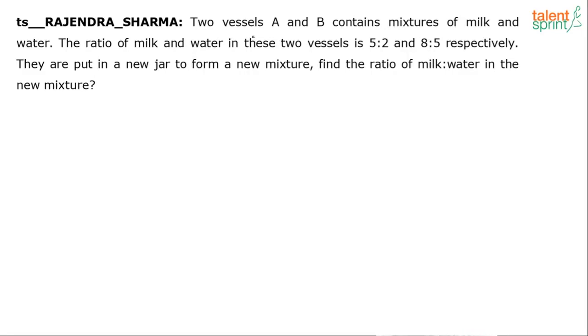Two vessels A and B contain mixtures of milk and water. The ratio of milk and water in these two vessels is 5:2 and 8:5 respectively. So there's one vessel which has milk and water in the ratio of 8:5, and another vessel which has milk and water in the ratio of 5:2.